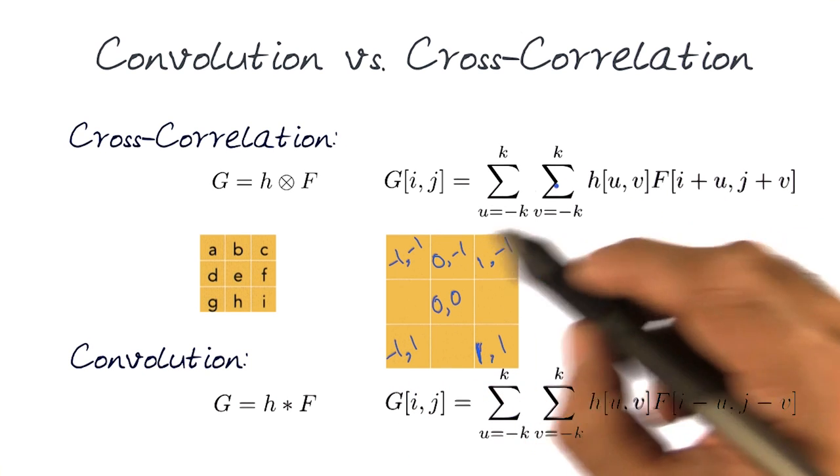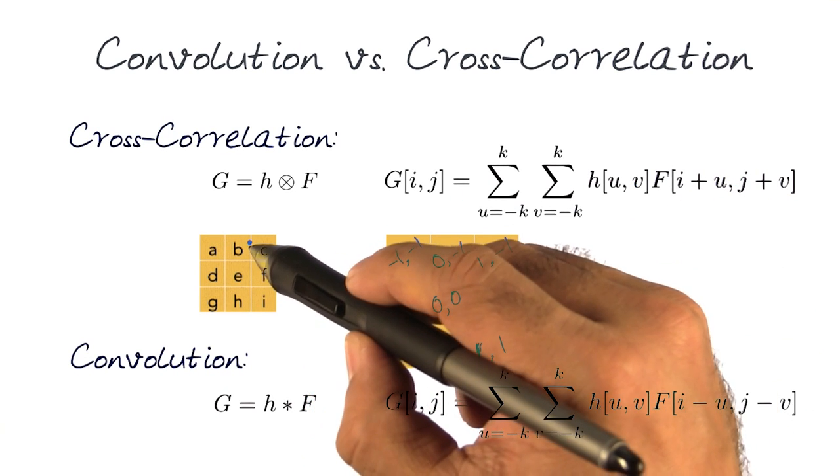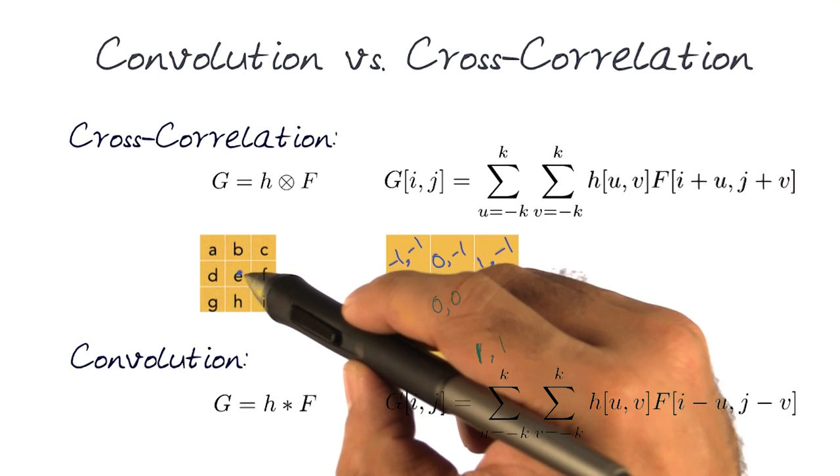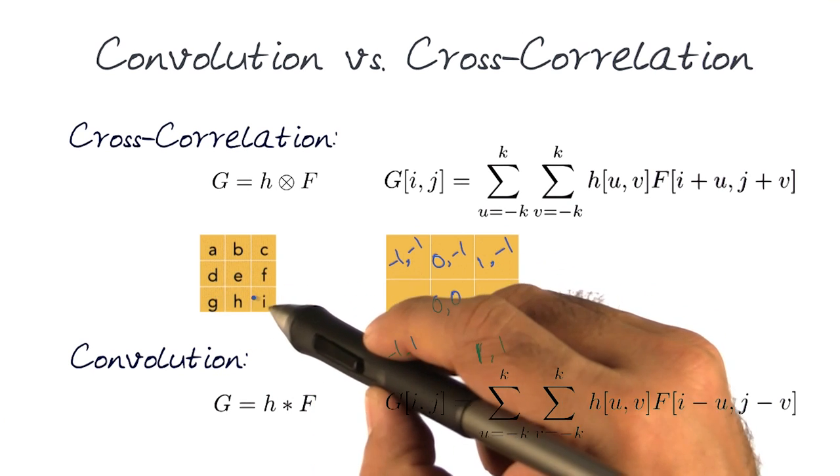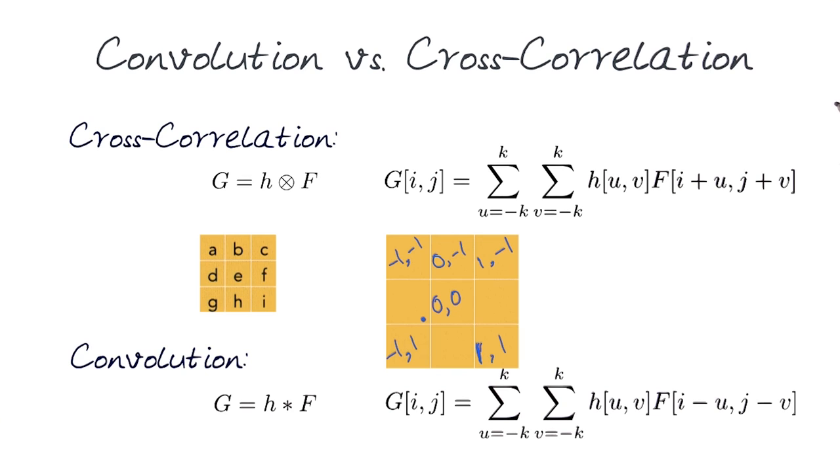So notice this is how we loop around. So in essence, when I did cross-correlation, I started, got A first, B first, C first, D first, E first, F first, and then G, H, and I. And that's how I actually did the looping and how I got the result.